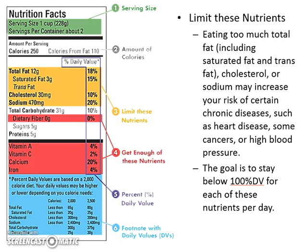The nutrients we need to limit are fat, cholesterol, and salt — that's number three. Eating too much of these can increase your risk of diseases such as heart disease, cancer, and high blood pressure. Your goal is to stay below 100% daily value for each of these nutrients. So if a bag of chips has 18% of your daily fat, and you're also having a sandwich, a soda, and dinner, you have to add up all those percentages and make sure they total less than 100%.